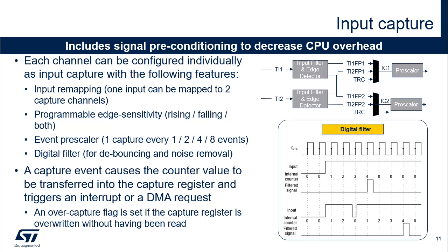Channels 1 to 4 can be individually configured as input capture with a number of signal conditioning options. An input can be mapped on two capture channels, typically to differentiate rising edge from falling edge capture. TRC input can be chosen as the capture trigger, connected to one of the ITR inputs for timer-to-timer interconnect. The edge sensitivity is programmable and can be rising edge, falling edge, or both edges. An event prescaler allows capture of one event every two, four, or eight events, decreasing the CPU burden when processing high-frequency signals and allowing more accurate measurements over multiple input signal periods.